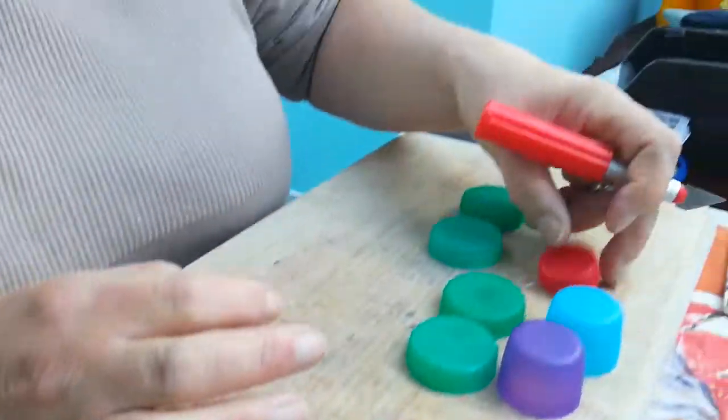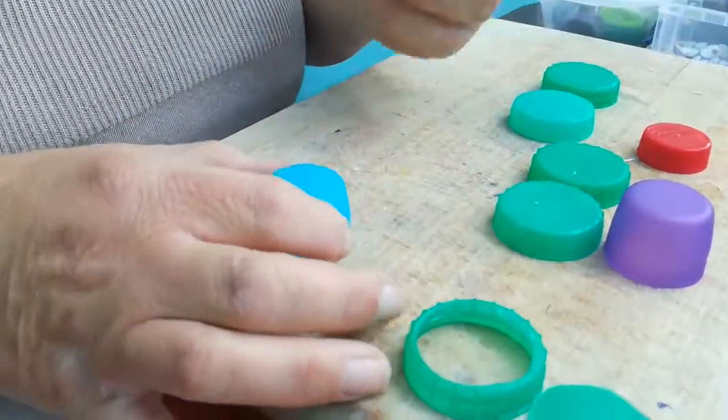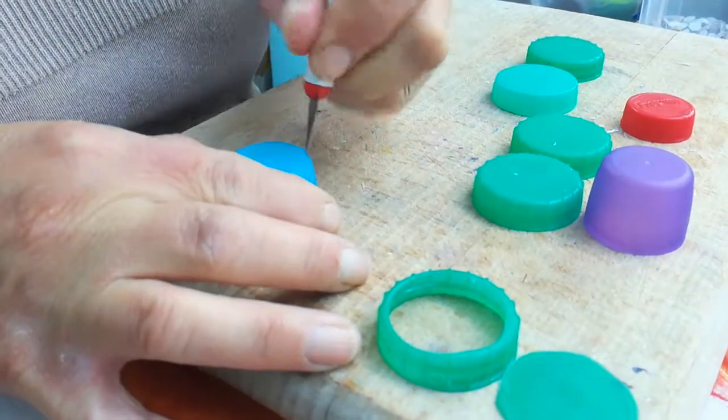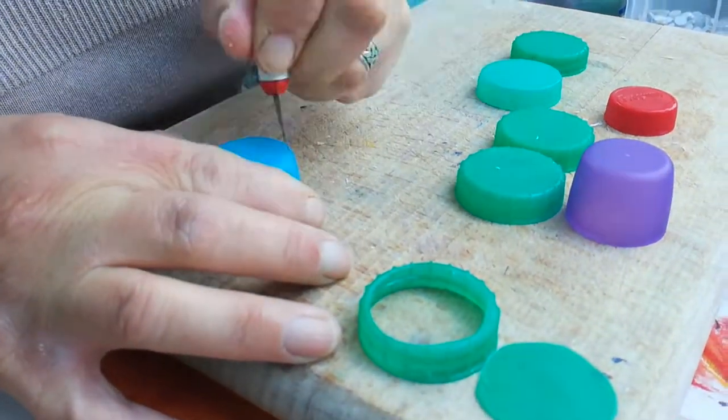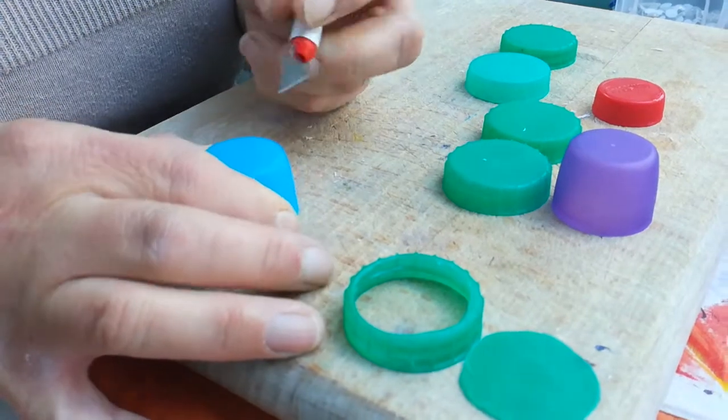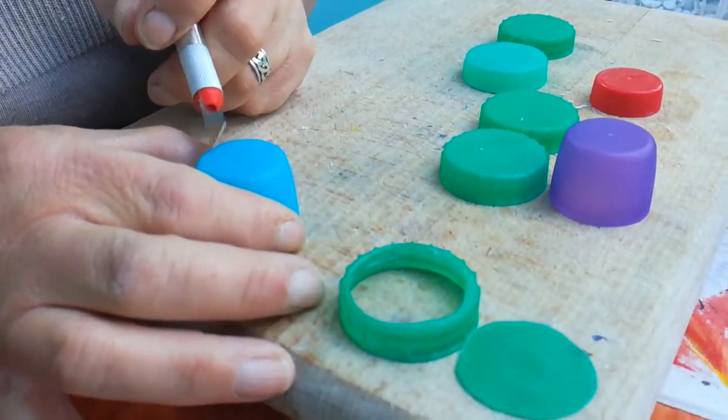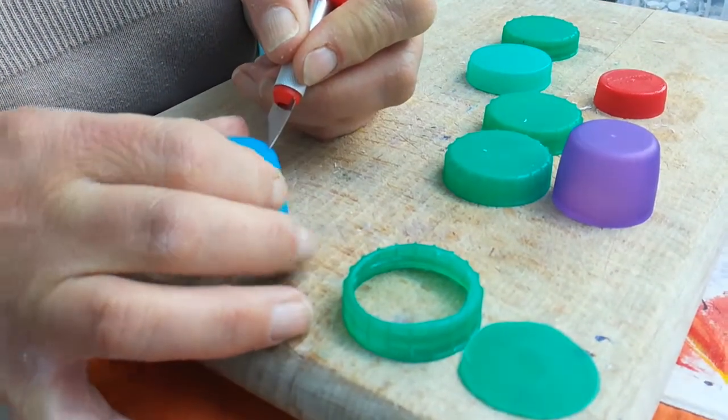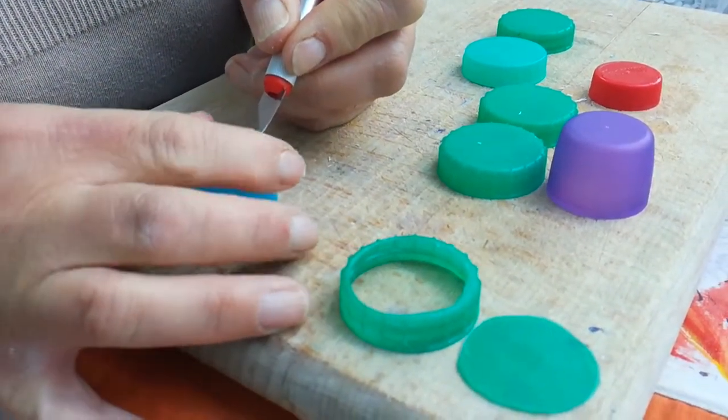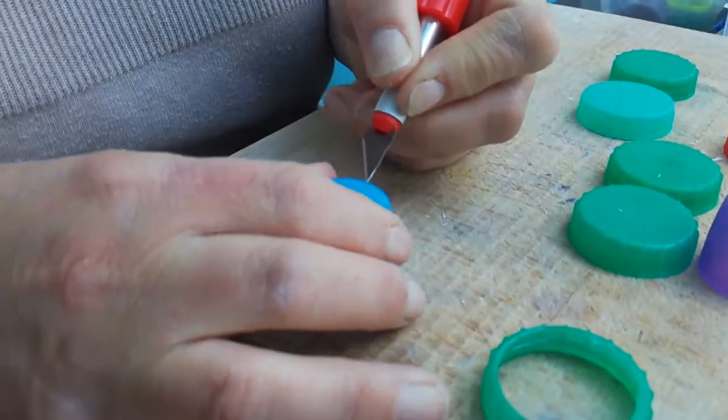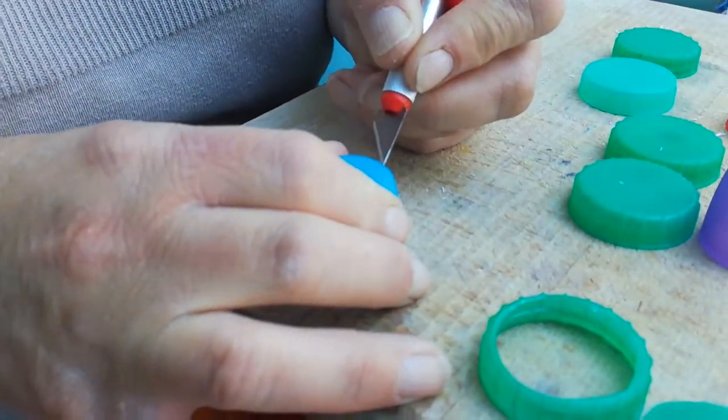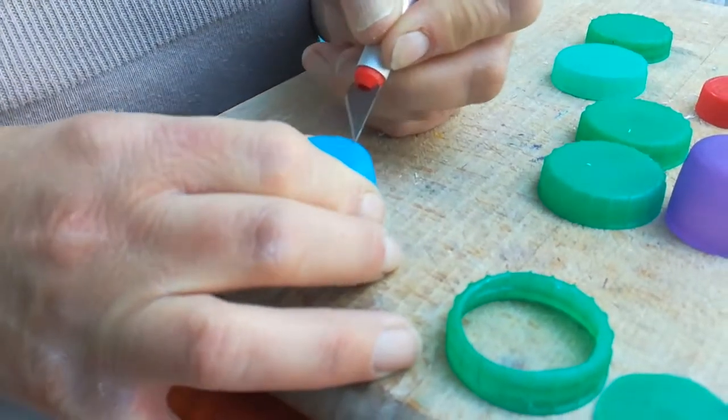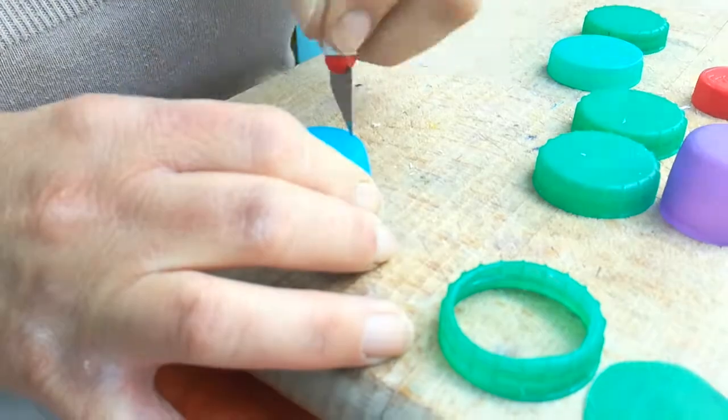These ones are deodorant or antiperspirant or body spray bottles and again you'd score around and then cut the middles out. These are nice because they're all sorts of different colors so you can sort of do what you like.